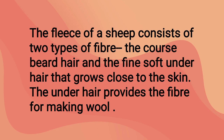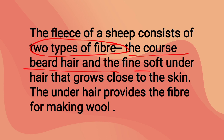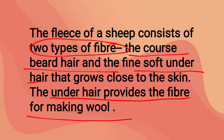The fleece of sheep consists of two types of fiber: coarse beard hair and fine soft under-hair. Coarse beard hair is the long hair present on the body of sheep, and fine soft under-hair is the hair found close to their skin. The under-hair provides the fiber for making wool.